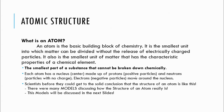Each atom has a nucleus in the center, which is made up of protons — positively charged — and neutrons, which have no charge. Note: 'neutral' means having equal positive and negative charge, but neutrons simply have no charge at all — those are two different things. Electrons are negatively charged and they move around the nucleus.